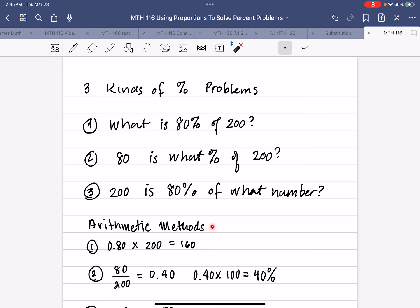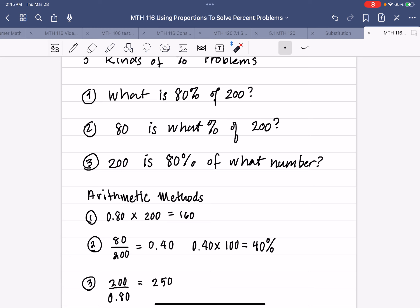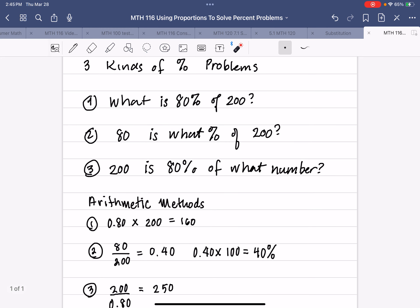Now, if we go by arithmetic methods, each one of these is going to have a completely different method. For example, if I want to do the first one by arithmetic, all I have to do is write the 80% as 0.80 and multiply that by 200, and I get the answer 160.